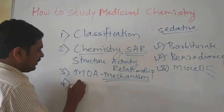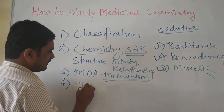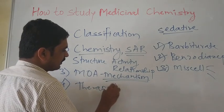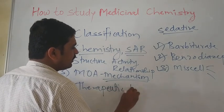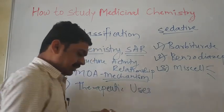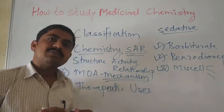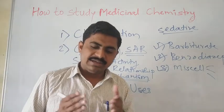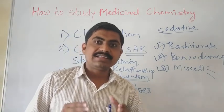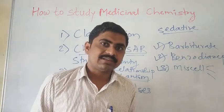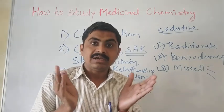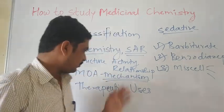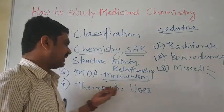The fourth point is therapeutic uses — what is the use of a particular drug? In which condition, which disease, or which disorder is a particular drug used? That is an important point: the therapeutic uses of the drug.